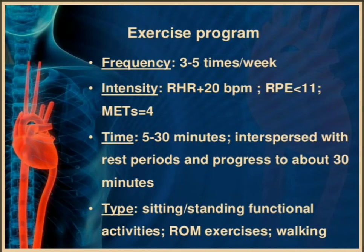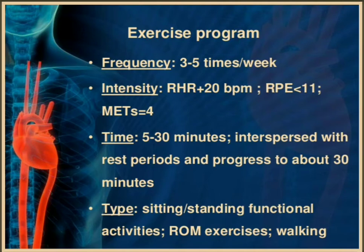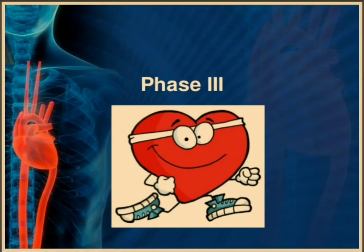Phase 2 exercise program: frequency 3 to 5 times a week; intensity resting heart rate plus 20 beats per minute, RPE less than 11, METs of 4; time 5 to 30 minutes interspersed with rest periods, progressing to about 30 minutes; type: sitting or standing functional activities, home exercises, walking.